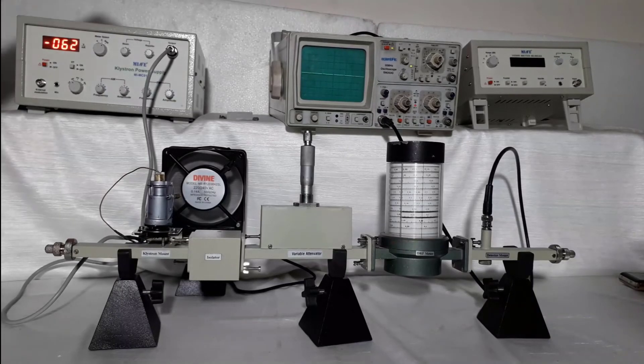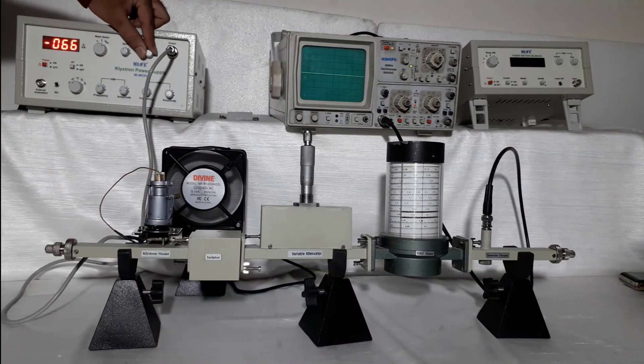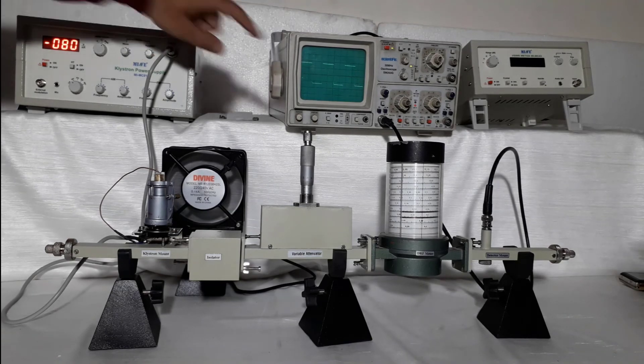Now choose any appropriate span where you get good amount of square waveform on CRO. Now by adjusting amplitude knob of AM, set square waveform output for maximum amplitude.